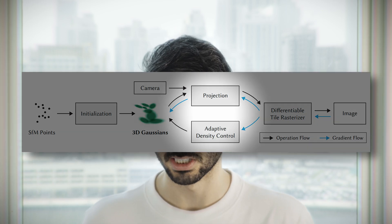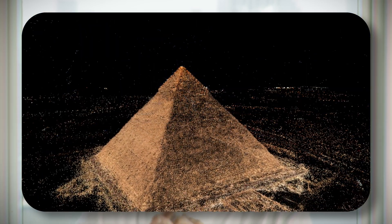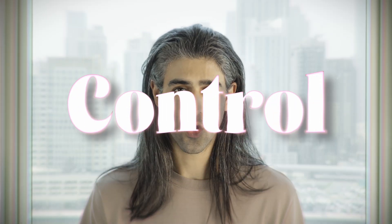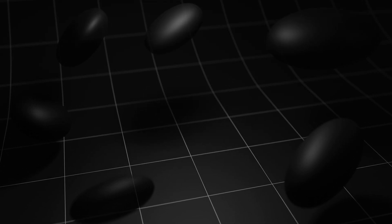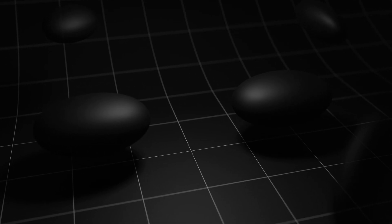At this point, the Gaussians enter an iterative optimization process, which is key to its quality and performance. These Gaussians get fine-tuned constantly to match the original photos that we took, by adjusting their 3D positions, color, opacity, and how their details vary from different directions. The training also uses an adaptive density control, which means when a Gaussian is too transparent, it gets removed, or when a Gaussian is too big for a detailed part of the scene, it splits into two.